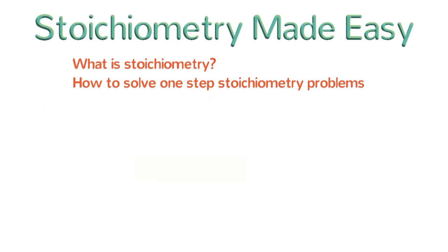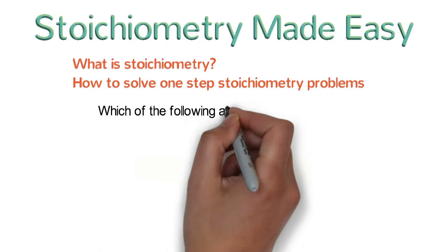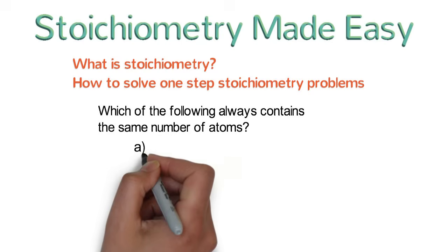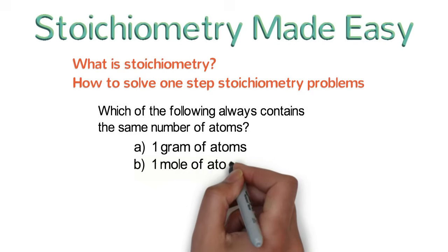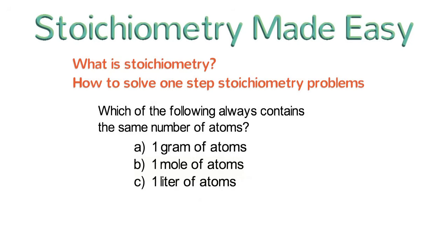But before we begin, let's start with a question. Which of the following always contains the same number of atoms? One gram of atoms, one mole of atoms, or one liter of atoms? The correct answer is B, one mole of atoms.